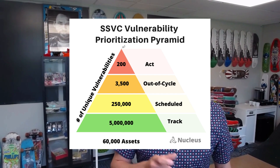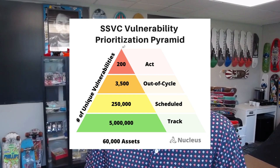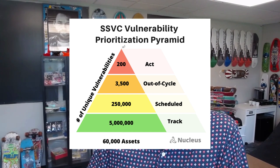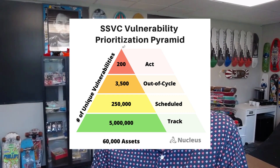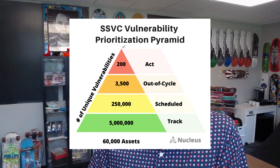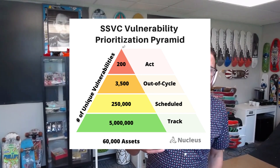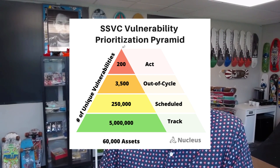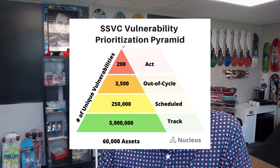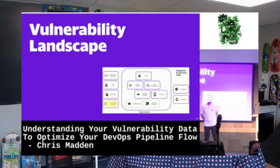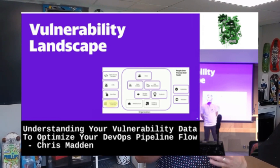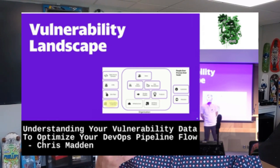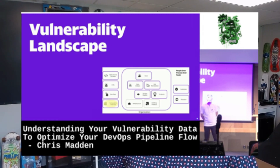I created the SSVC vulnerability prioritization pyramid to help have discussions with key stakeholders on resource allocation and how many vulnerabilities are mapping to each outcome. This is a real-world example of an organization with roughly 60,000 assets using the decision criteria and decision tree provided in the guide.